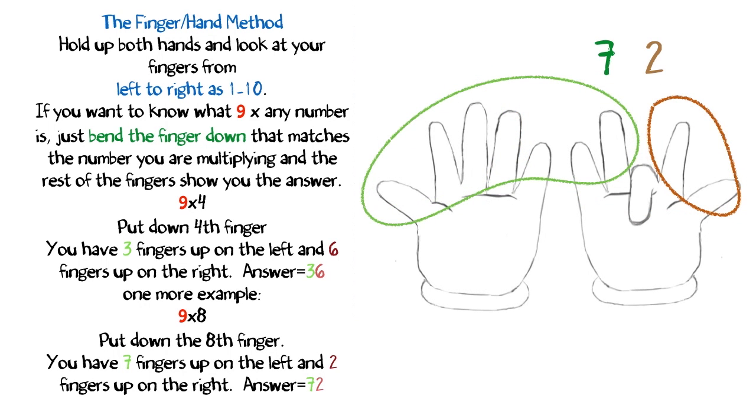One more example. 9 times 8. Put down the 8th finger. You have 7 fingers up on the left and 2 fingers up on the right. Answer equals 72.